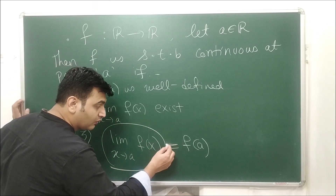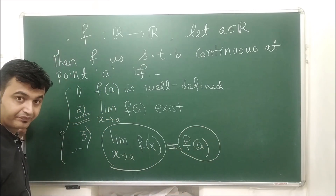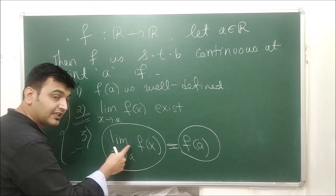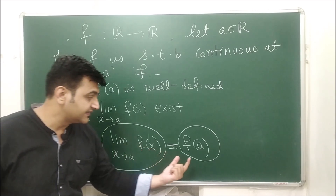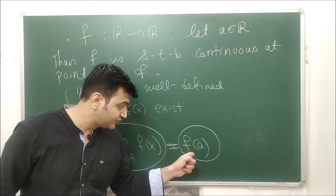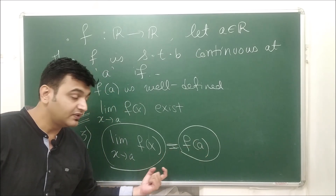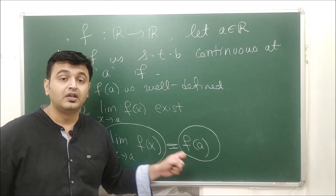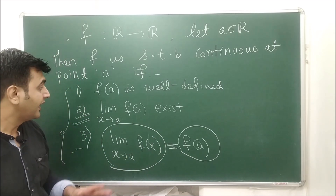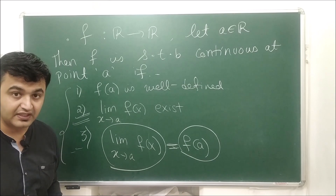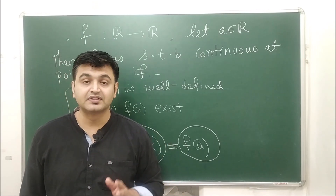The third condition is that the limiting value of the function must be equal to the actual value of the function at point 'a'. The left-hand side is the limiting value as X approaches 'a', and the right-hand side is the actual value f(a). When the limiting value equals the actual value, only then is your function continuous. If any one of the three conditions fails, the function is not continuous at that point.